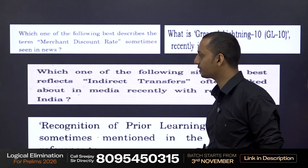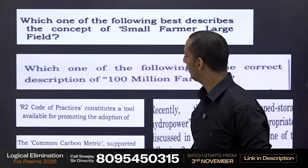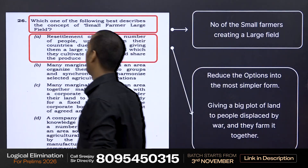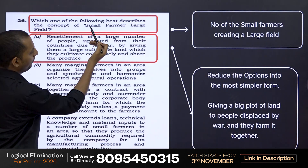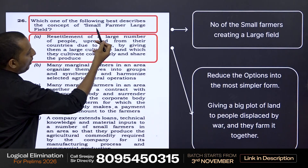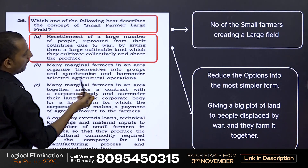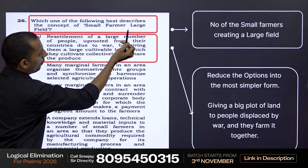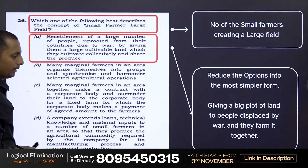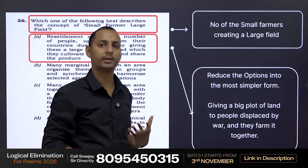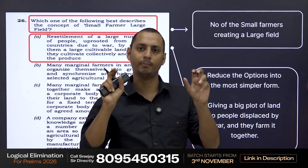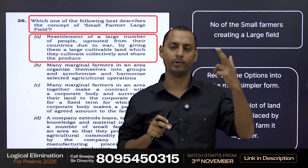Now how should you solve it? The first thing that you have to do is to split the words. Here the question talks about 'small farmer large field.' So the first word would be 'small farmer' and the other word would be 'large field.' Now what comes to your mind when you hear 'small farmer large field'? You have to make a general meaning in your mind regarding the same.